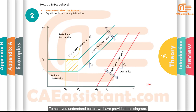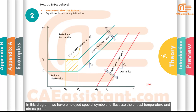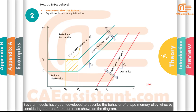To help you understand better, we have provided a diagram that includes the possible phase transformations in SMAs, where the horizontal axis represents temperature and the vertical axis shows stress. Special symbols illustrate the critical temperature and stress points. A detailed discussion of this diagram and its parameters for simulating phase transformations in SMAs is available in the package provided by the CAE Assistant group.